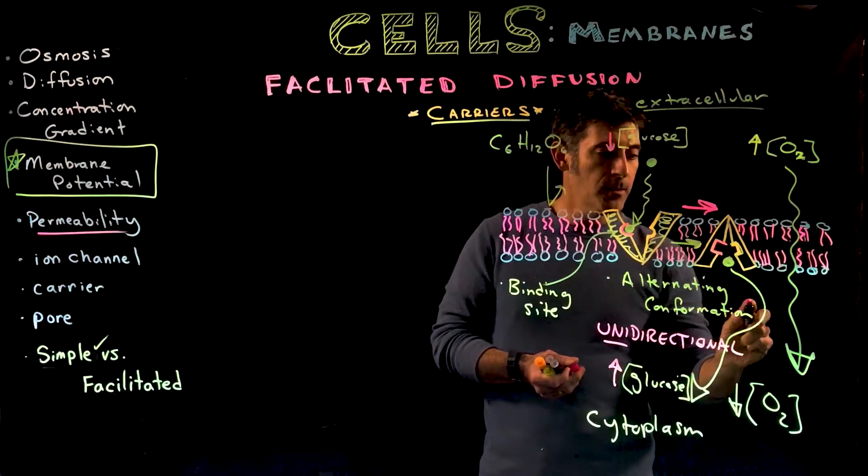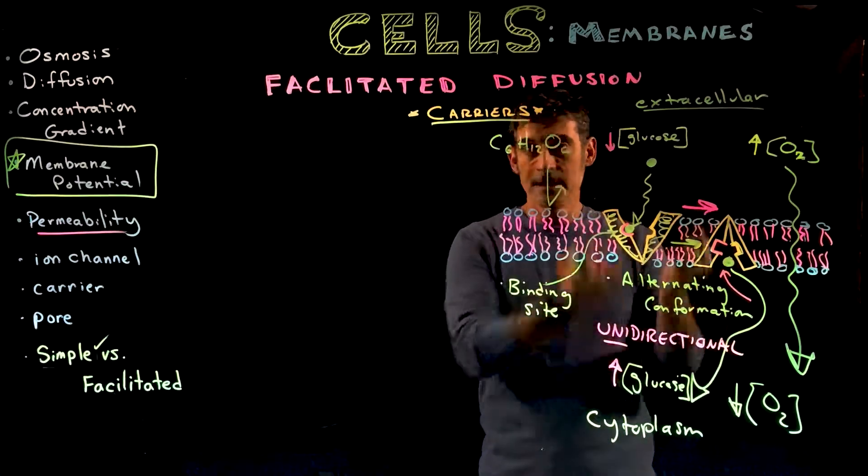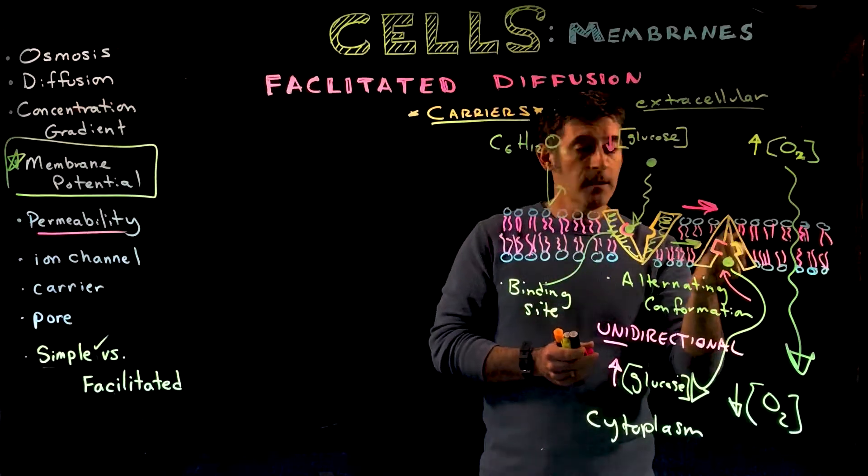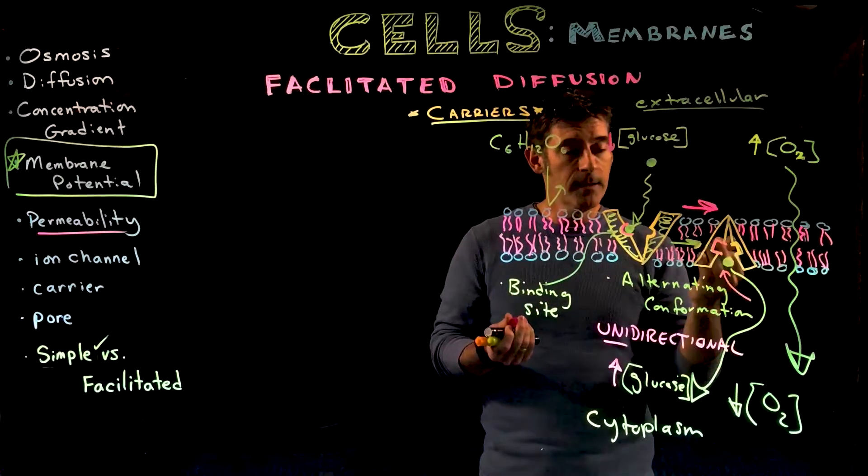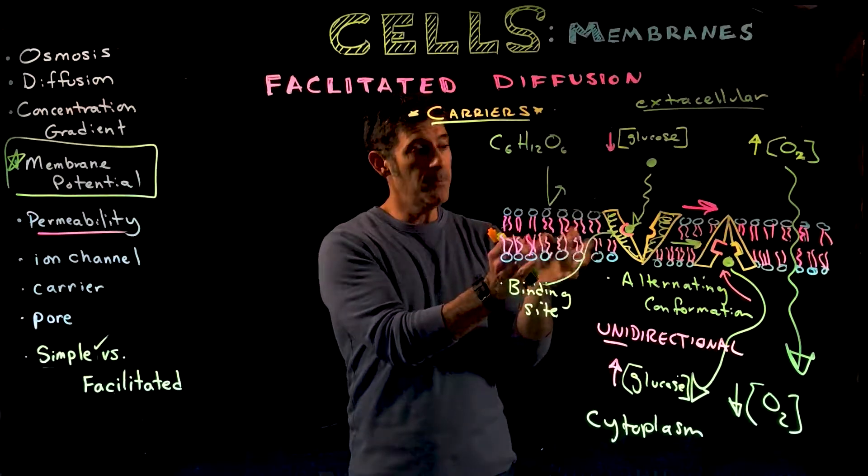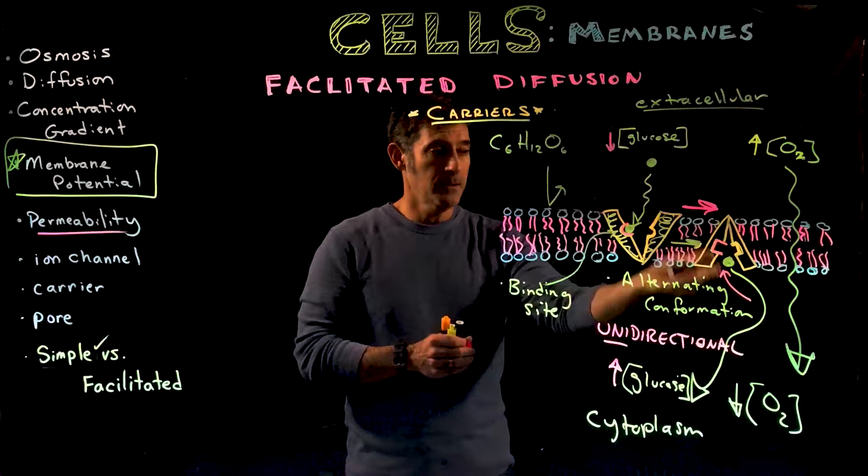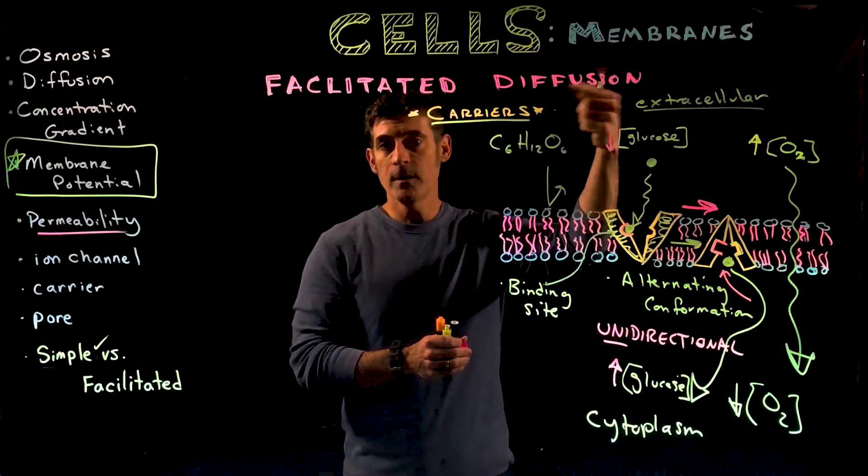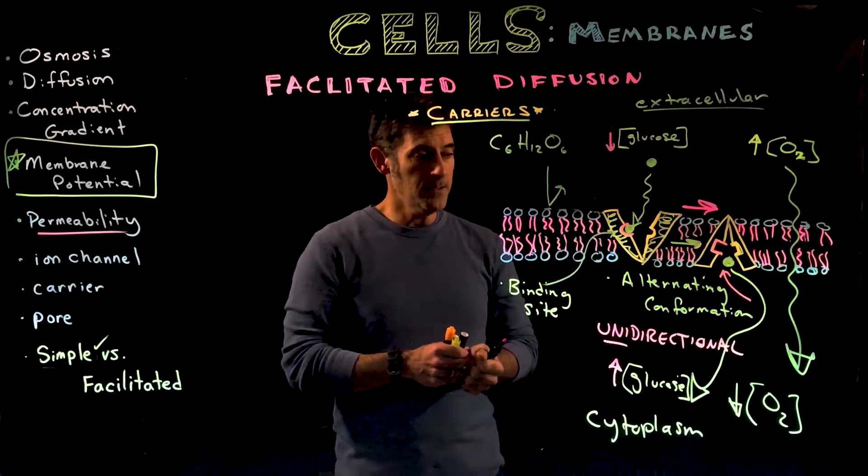A glucose molecule trying to get out of the cell wouldn't bind to this carrier. The carrier is in a particular orientation, a conformation, a shape that doesn't bind glucose on this side. It only binds glucose on the outside, so it only moves it into the cell.